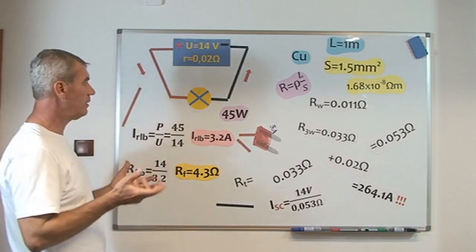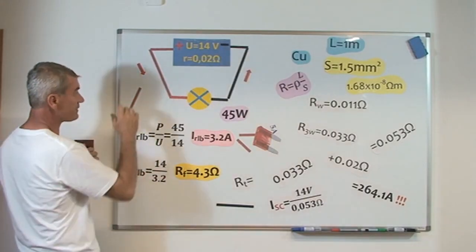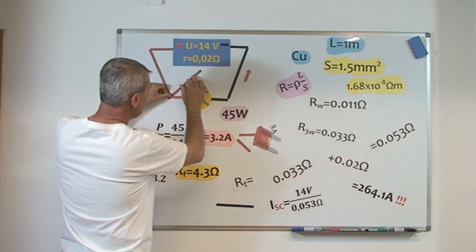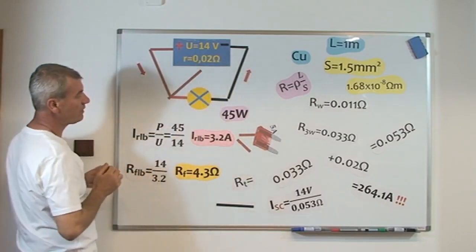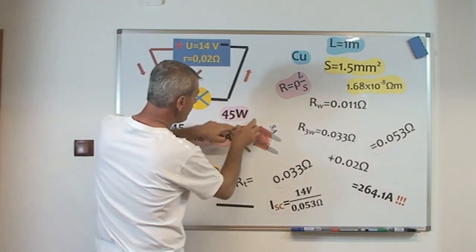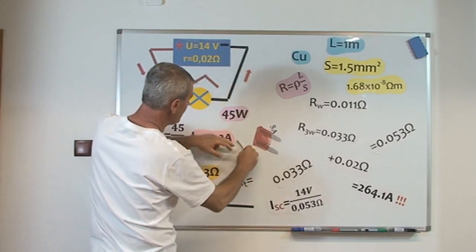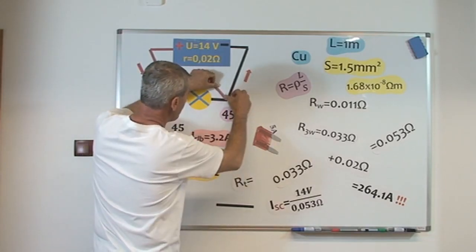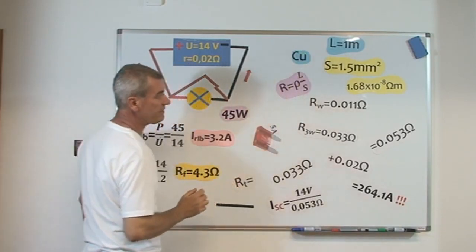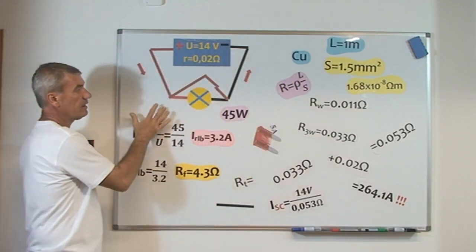But what happens when we have short circuit? To have a short circuit, I need to touch the wires, the ends of the battery, the voltage supply, with a copper wire of one meter length and section 1.5 square millimeters.